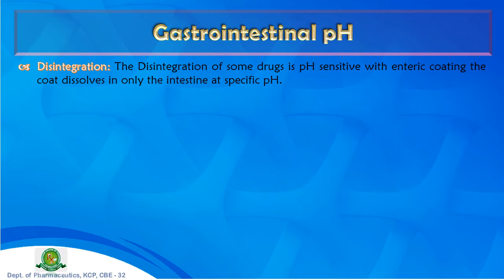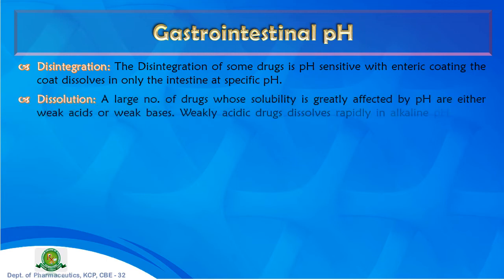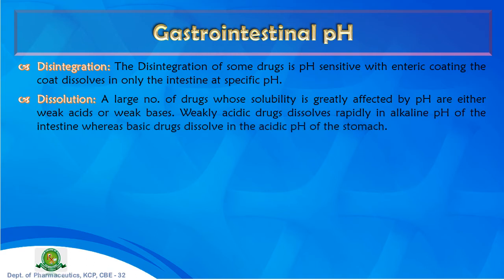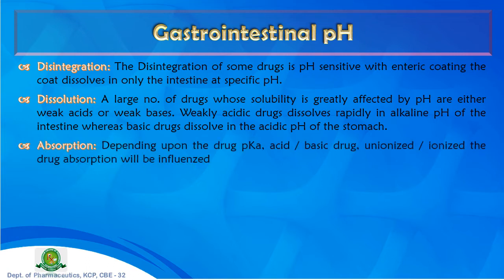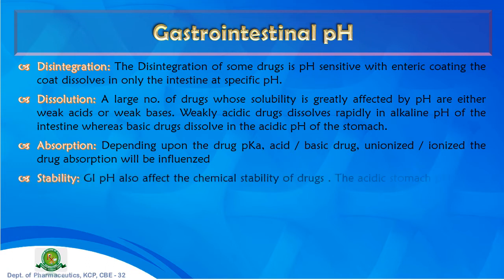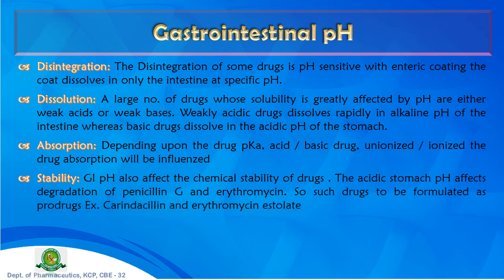Disintegration: pH-sensitive enteric-coated tablets dissolve only at intestinal pH, not in the highly acidic stomach environment. Dissolution: weakly acidic drugs dissolve rapidly in the alkaline intestinal pH, while basic drugs dissolve in the acidic stomach pH — GI pH greatly affects solubility. Absorption: drug pKa, ionized/unionized state, and GI regional pH all interlink to influence absorption.